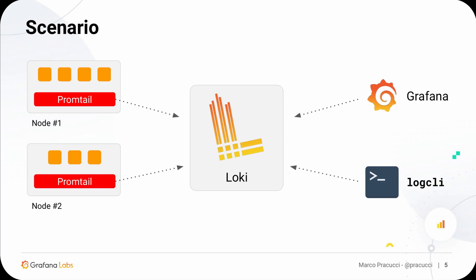The typical problem we have is a distributed system composed by many applications or microservices, each one logging tons of logs, and we want a cost-effective way to collect those logs, store them, and then eventually query them back. The way Loki works is based on an agent called Promptail which you install on each node running your applications or services. Promptail tails the logs from the local file system and pushes those logs to a central server which is Loki. You then query back your logs using Grafana or a command line tool called LogCLI.